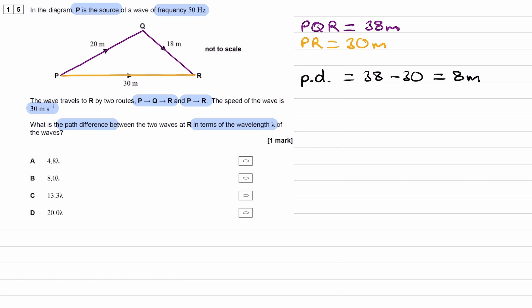We can do that by using the equation v equals f lambda. We have the frequency, we have the speed. So we can rearrange this for lambda. Lambda is equal to v over f. V is equal to 30, frequency is 50. So this is then 3 over 5 meters or 0.6 meters. So we have what the path difference is in meters and we have what the wavelength is. The wavelength is equal to 0.6 meters.